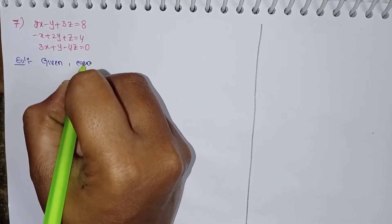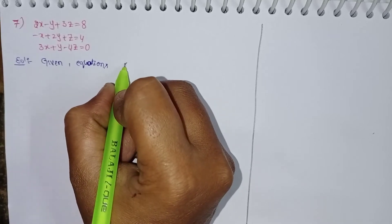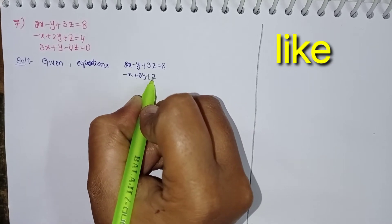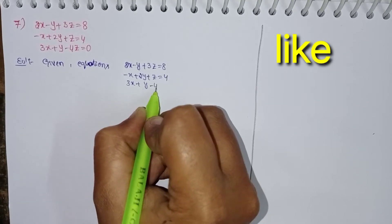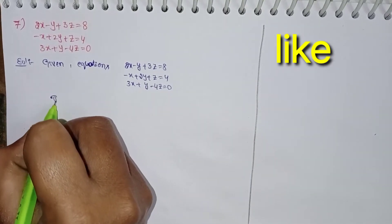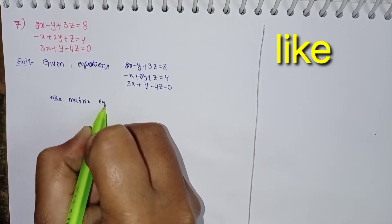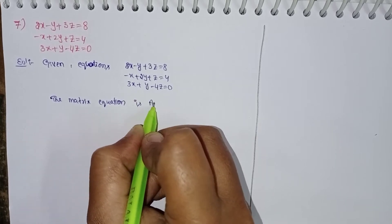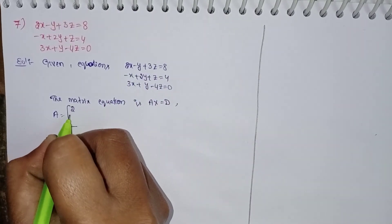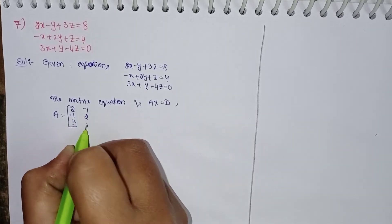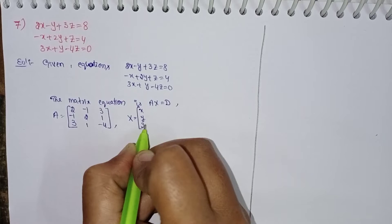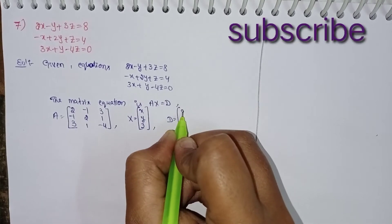First, write the given equations. The given equations are: 2x minus y plus 3z equal to 8; minus x plus 2y plus z equal to 4; 3x plus y minus 4z equal to 0.